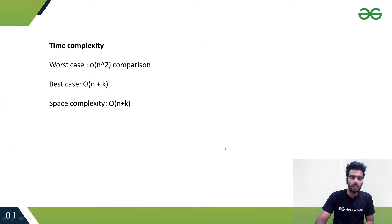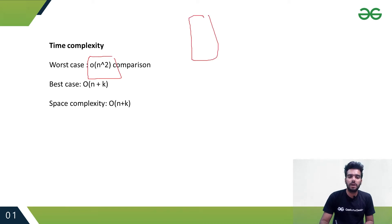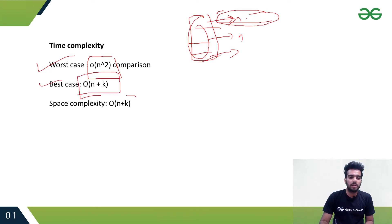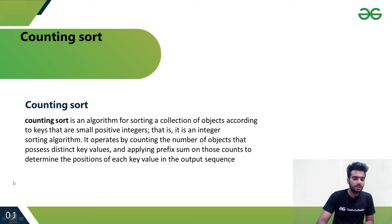Now let's see the time complexity of bucket sort. At worst case it is O(n²), because if there are n buckets each containing n elements, we have to do sorting work on each bucket as well. At best case the time complexity is O(n + k), and the space complexity is O(n + k).